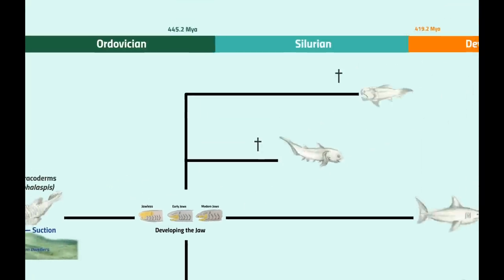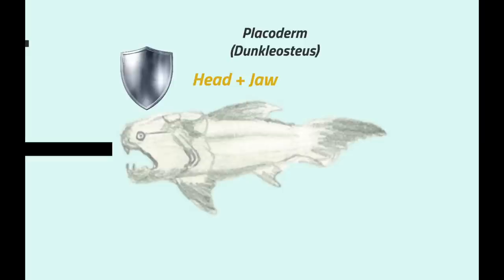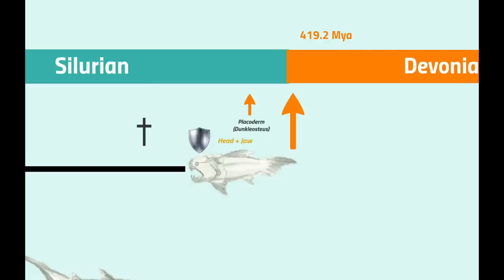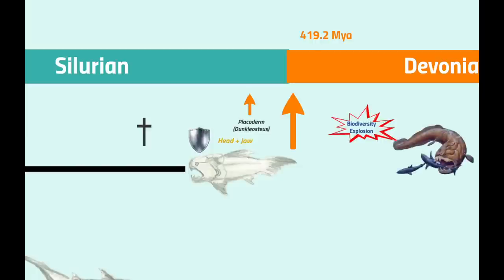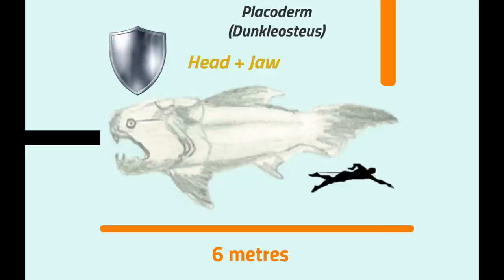Among the first jawed fish were the placoderms. Like the Astracoderms before them, these fish bore heavy armor on the head and neck. Although this class of fish is first seen in the late Silurian, it is not until the Devonian that these fish undergo a major biodiversity explosion. The placoderms went on to become the most abundant form of vertebrate life during this period, dominating the Devonian seas. With the innovation of jaws, some placoderms became the planet's first vertebrate super predators, such as Dunkleosteus Torelli, which could grow up to 6 metres long and weigh up to a ton, making it among the largest animals seen on the planet up until this point.